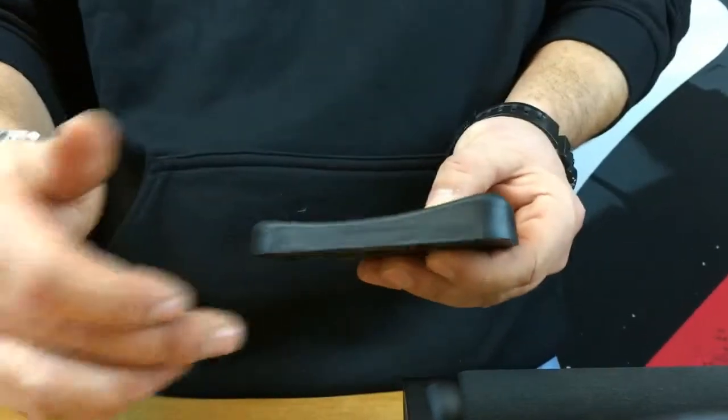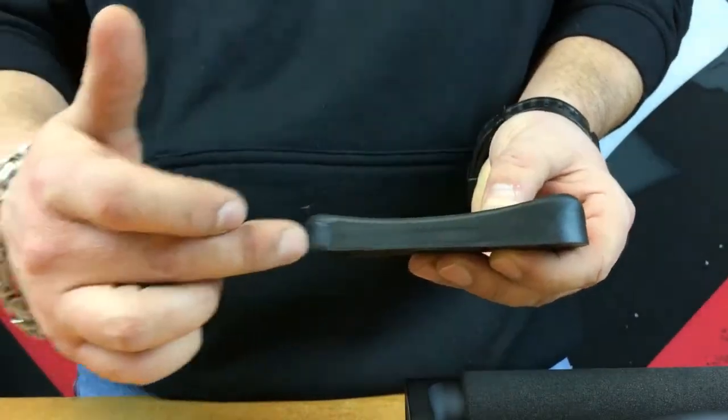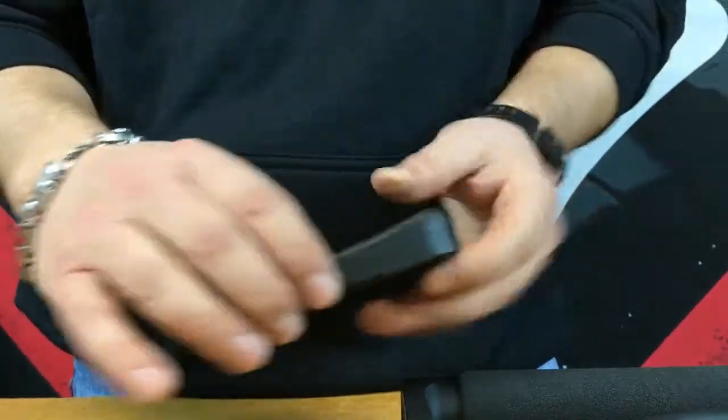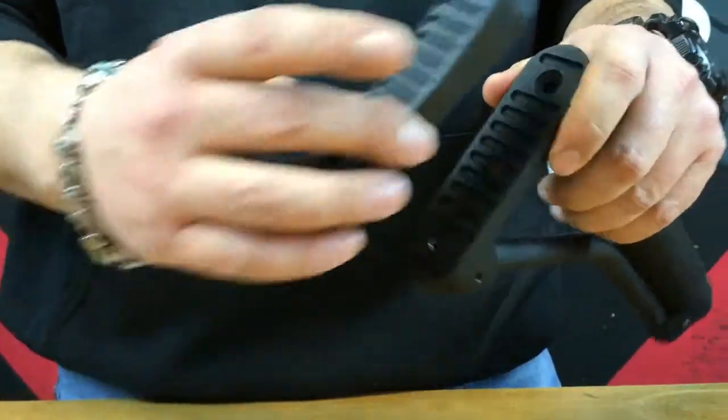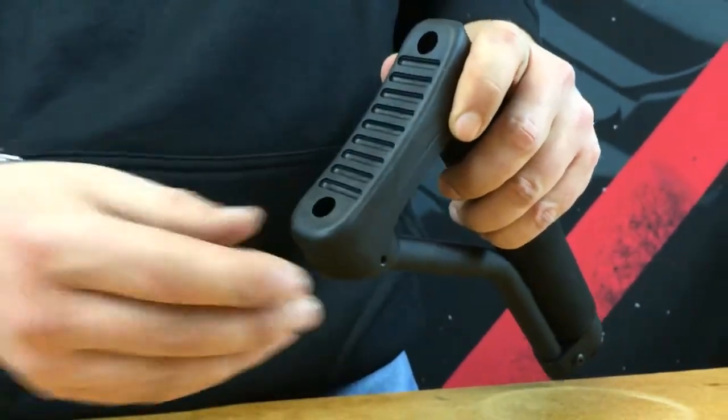If you look at your butt pad, the top here has a thick end, down at the other end is thinner. So your thick end goes to the top of the butt stock, thin end goes to the bottom.